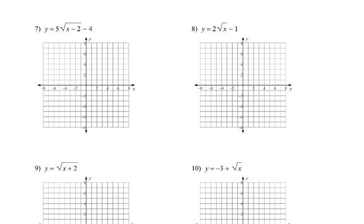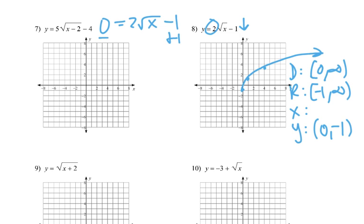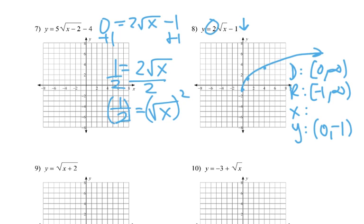Now number 8: we're going to go down 1 and then double it. We start at negative 1. As we go to the right, instead of up 1 we go up 2; to the right 4, instead of up 2 we go up 4. So it's got a vertical stretch. Domain: 0 to infinity. Range: negative 1 to infinity. Y-intercept: (0,−1). To find the x-intercept, set y = 0, add 1, divide by 2 — giving ½ = √x. Squaring: x = 1/4. So the x-intercept is (1/4, 0).